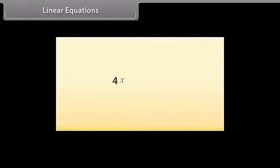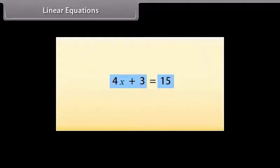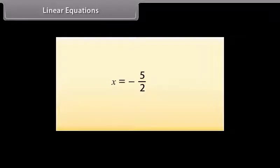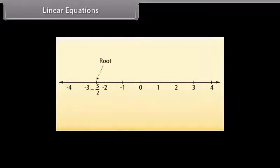We know that a simple linear equation is an equality between two algebraic expressions involving an unknown value called the variable. The two sides of an equation are called the right-hand side or RHS and left-hand side or LHS. Consider this equation — the solution or the root of this equation is minus 5 by 2. Let's see where it represents on the number line. Here it is.